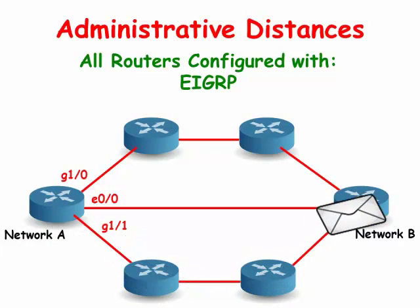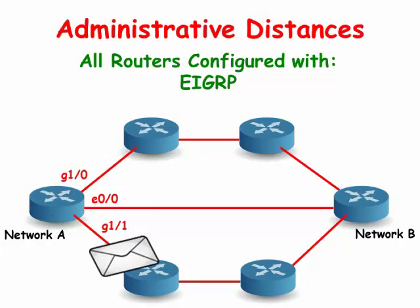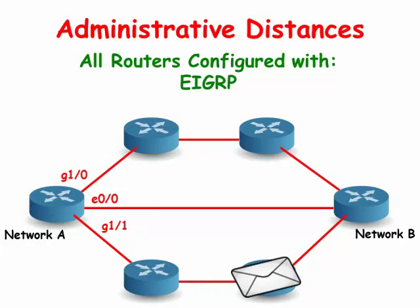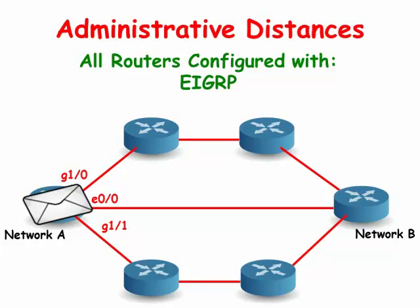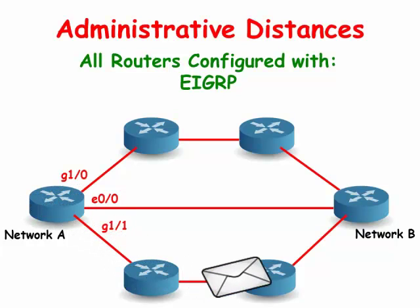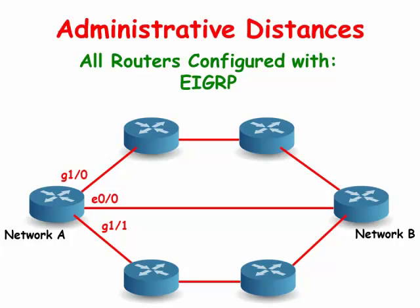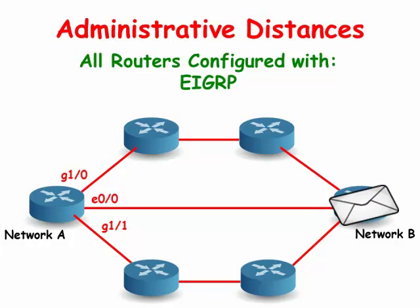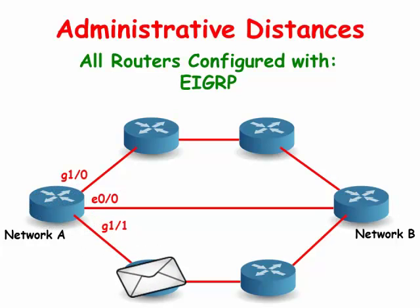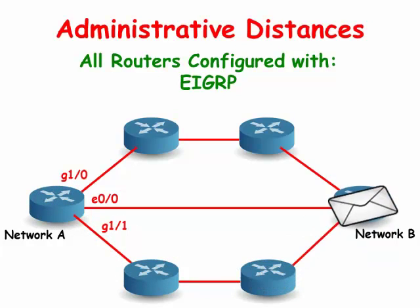The routers are all configured with EIGRP in this scenario. Network A's router chooses gigabit Ethernet 1/1 to forward packets to network B. This is because a composite metric called K values indicates that gigabit Ethernet 1/1 is the best path.